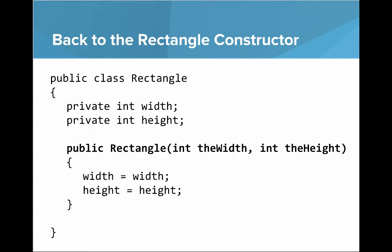Let's go back to our rectangle constructor. I've highlighted the line here, the first line of the constructor that says public Rectangle(int theWidth, int theHeight).